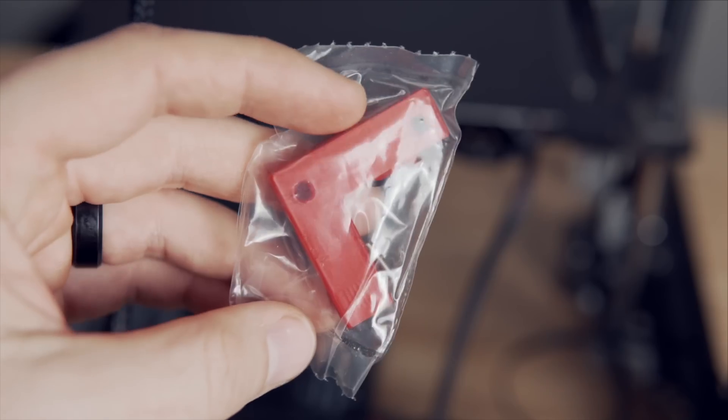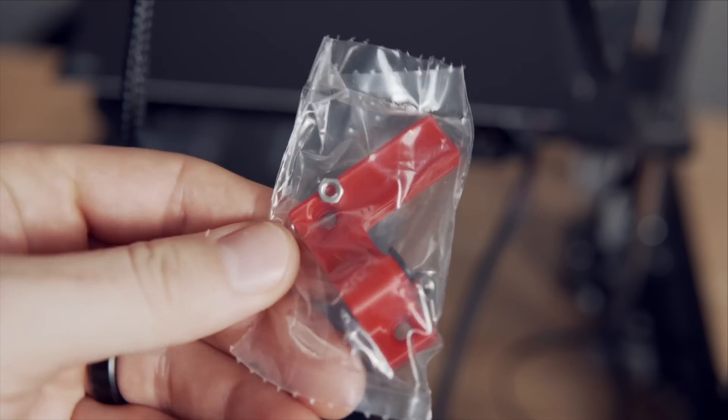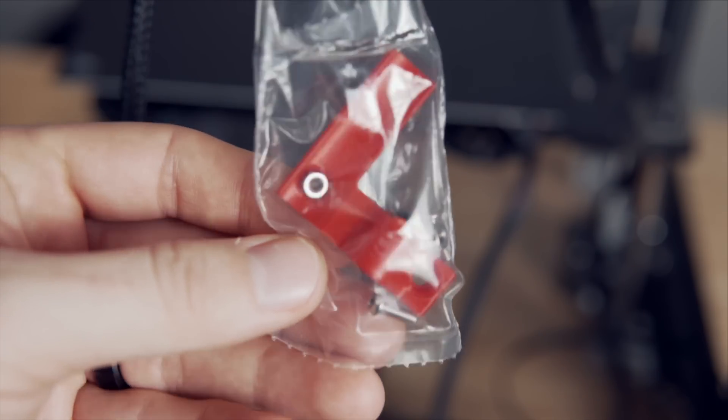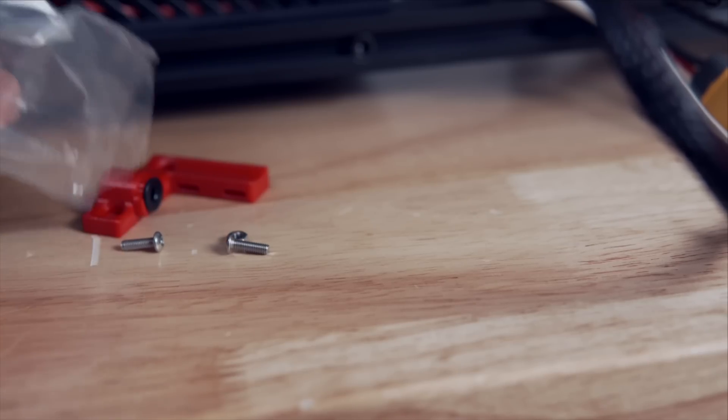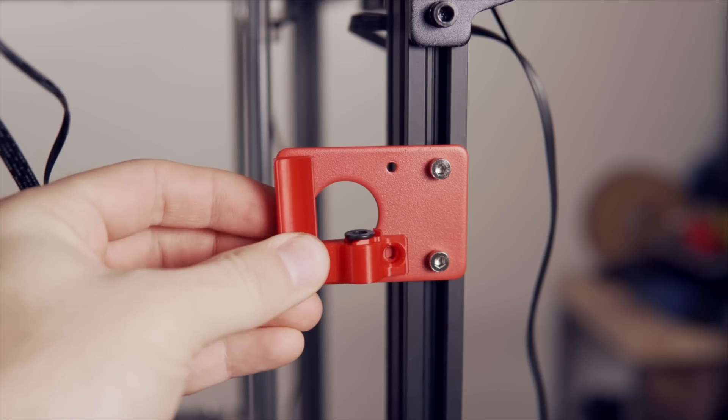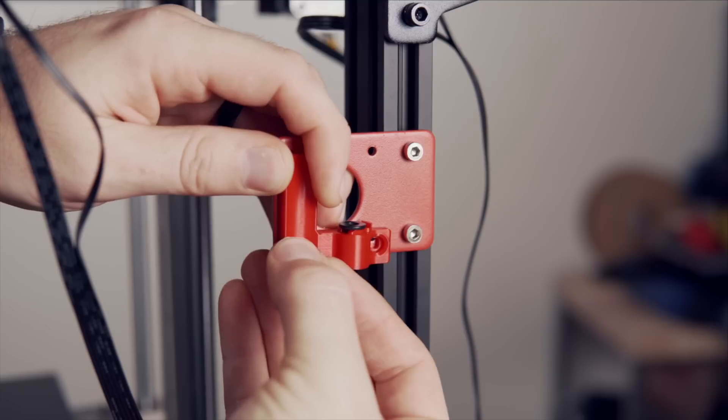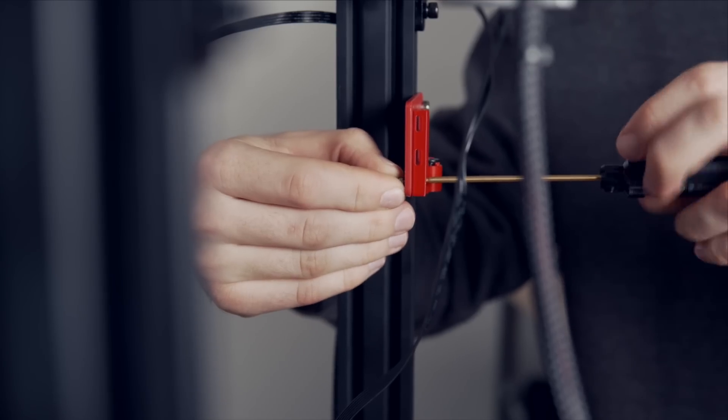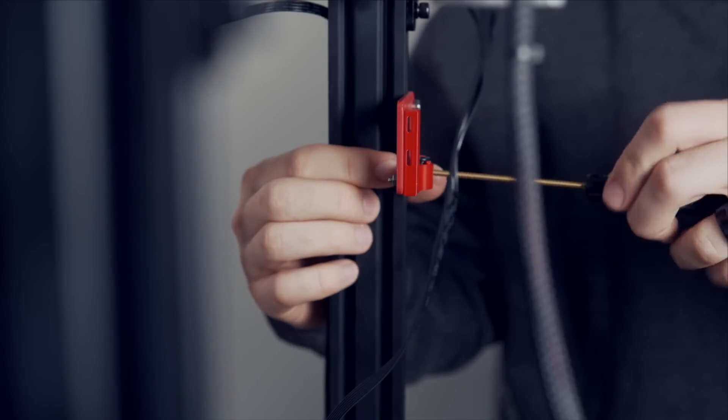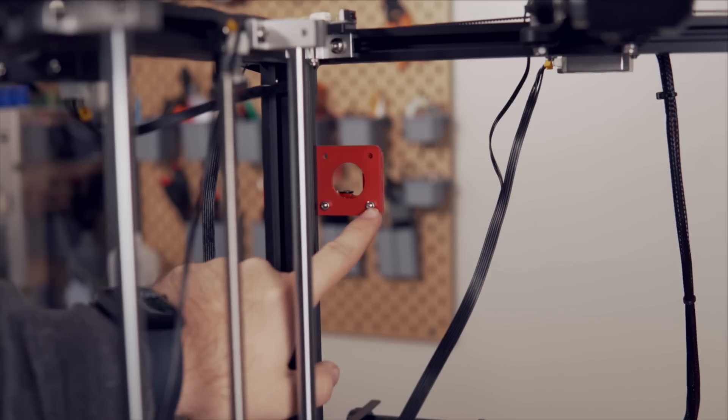Now we are going to install the reverse bowden, which will be our filament guide tube. For this, we'll take the bag that has the printed bracket with the two screws and the two nuts, and we're going to be installing this where our old extruder was. We'll take the two screws and we'll place them through the holes on the printed part, and then we will secure them in place using those two nuts on the back side of that aluminum bracket.